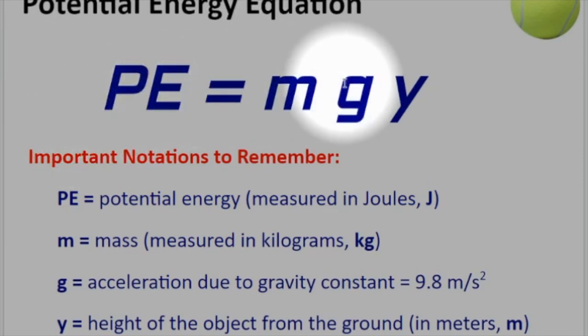I'm showing you the equation. PE is the potential energy, always measured in joules. The mass M is always measured in kilograms. G is a constant with a value of 9.8 meters per second squared, and y is the height of the object from the ground in meters.